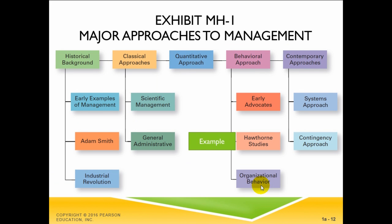It is important to understand the past to realize the advancements and mistakes made by each management era. Many have argued that there are no great new management ideas, but rather a series of making the same mistakes. By understanding historical management philosophies, these mistakes can be avoided. We will focus on 20th century management approaches, though there is much to learn from managers of earlier centuries. The first scientific studies in management were called the classical approach, which emphasized rationality in making organizations and workers as efficient as possible.